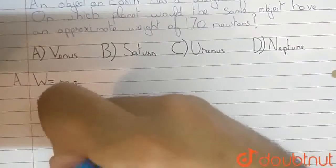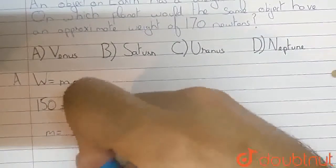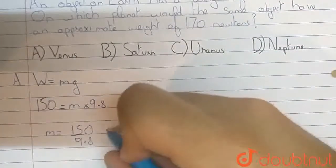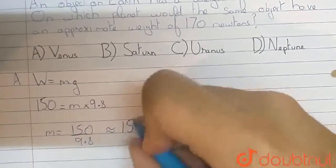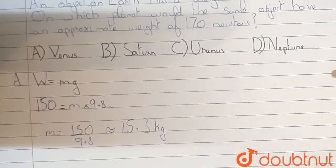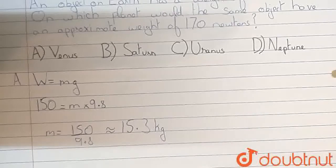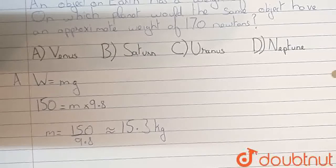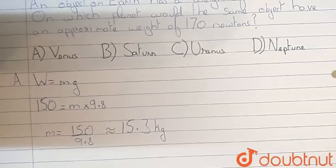We get m is equal to 150 divided by 9.8. So now we know that the mass of the object is 15.3 kg. Mass of an object always remains the same, no matter what the acceleration due to gravity is and no matter on which planet it is. But the weight is actually what changes.